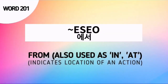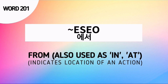Esso is actually not an independent word. This is usually attached to a noun that indicates location. This is used to say 'from,' or also 'in' or 'at.' This is more of indicating the location of an action. Specifically, Esso is used to indicate the initial location of an action. That's why it could be used as 'from.'